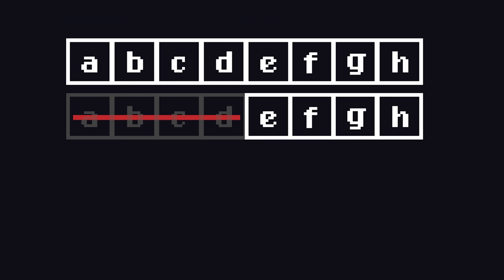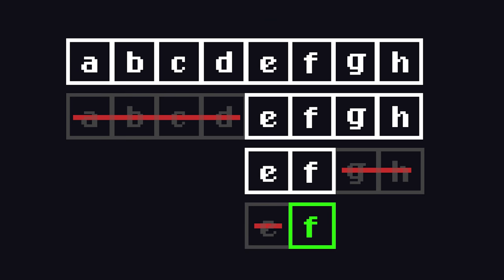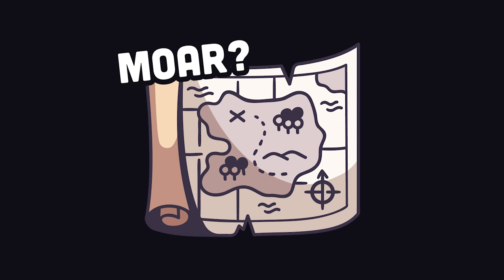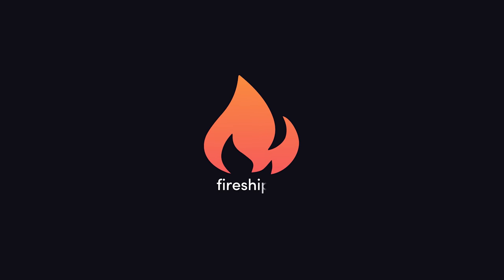And now we have an algorithm that can find an element in a sorted array much faster than a regular loop. If you want to see more videos about algorithms on this channel, hit the like button and let me know in the comments. Thanks for watching, and I will see you in the next one.